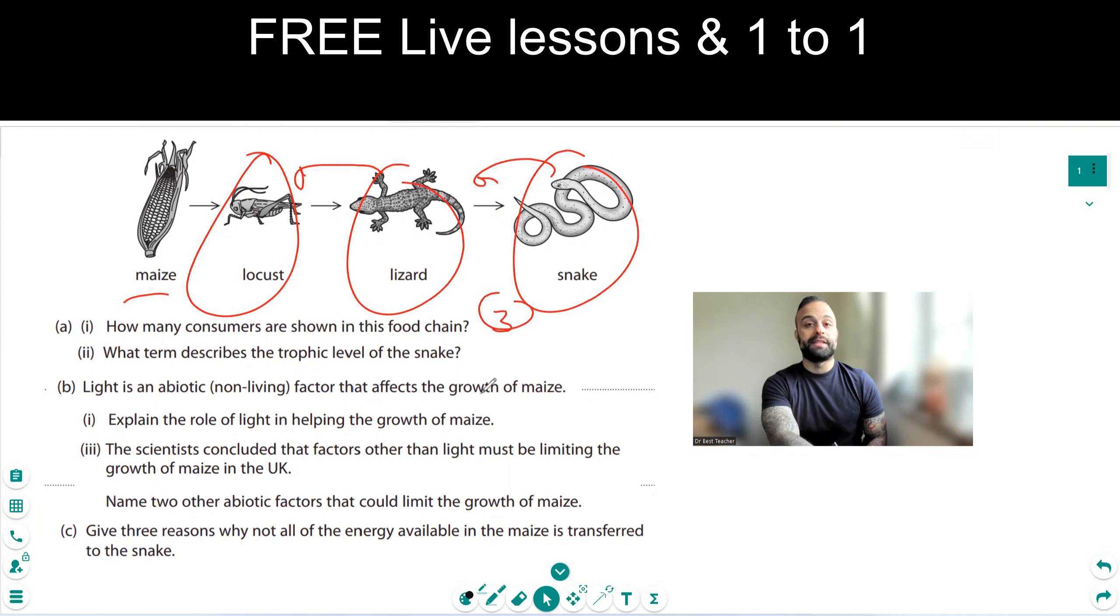What describes the trophic level of the snake? So the snake is part of the tertiary consumer because this is the primary, secondary, and this one is that one. So that is the tertiary.